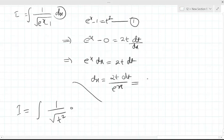So value of e to the power x from 1 you can see is t square plus 1. Because e to the power x minus 1 is t square. So e to the power x will be t square plus 1.